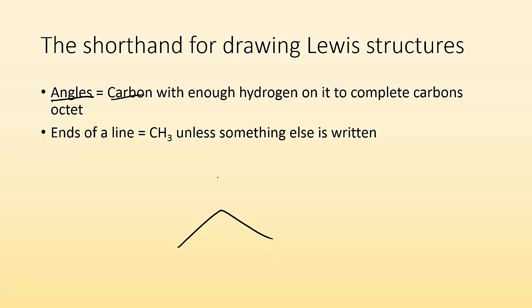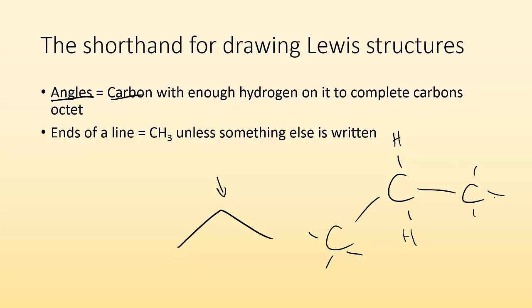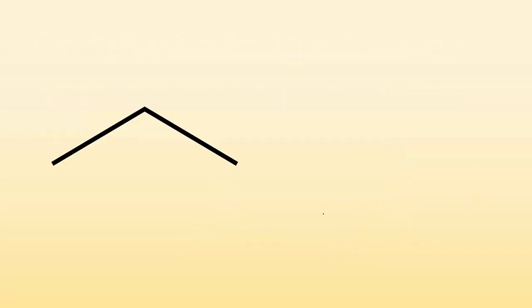So for example, if I had something like this, here I have an angle and that's telling me I've got a carbon with enough hydrogens on it to complete its octet. Ends of lines are going to be CH3s — carbons with enough hydrogens to complete their octet — unless something else is written there. I'm going to show you a bunch of examples so you understand what we're talking about.